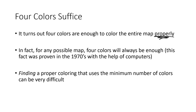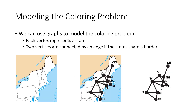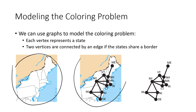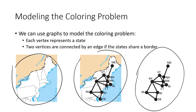Finding a proper coloring that uses the minimum number of colors can be a very difficult problem. One thing we're going to do is model the coloring problem using graphs. The graph has vertices that represent each region — in this case, each state — and two vertices are connected by an edge if those states share a border. We start with the original map, build a graph where every vertex represents a state and edges connect states that share borders, and then work with that graph.